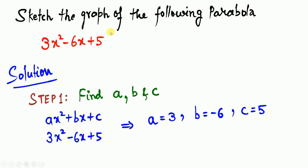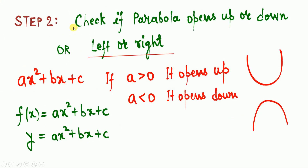Let's sketch the graph of f(x) = 3x² − 6x + 5. Step 1: find a, b, c by comparing — a = 3, b = −6, c = 5. Step 2: check whether the parabola opens up or down. Since this is a function of x, the parabola opens either up or down.